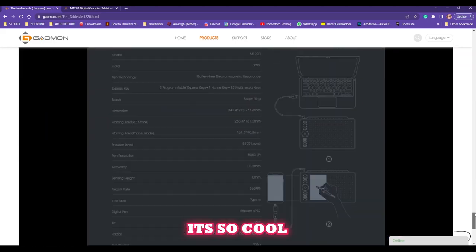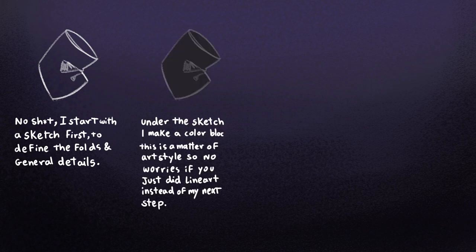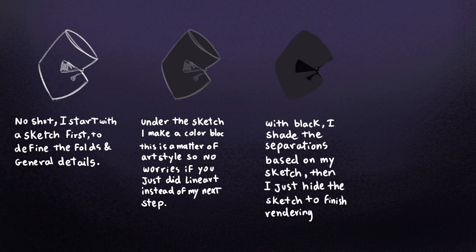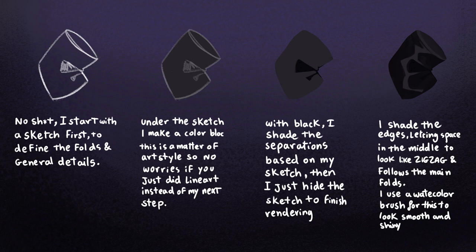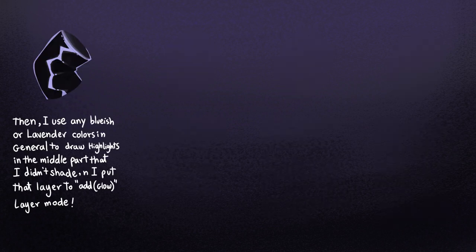Now for leather — I start with a sketch first to define the folds and general details. Under the sketch I make a color block. With black, I shade the separations based on my sketch, then hide the sketch to finish rendering. I shade the edges, leaving space in the middle to look like a zigzag that follows the main fold. I use a watercolor brush for this to look smooth and shiny.